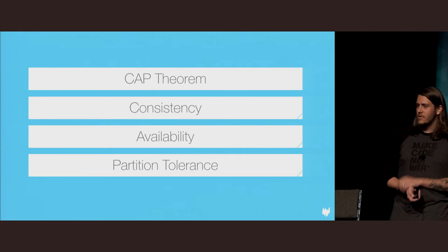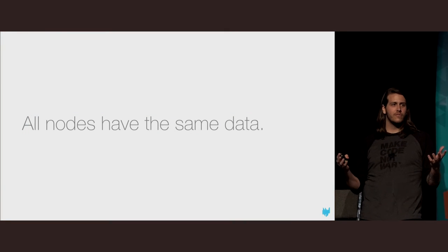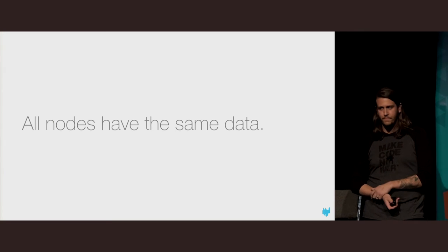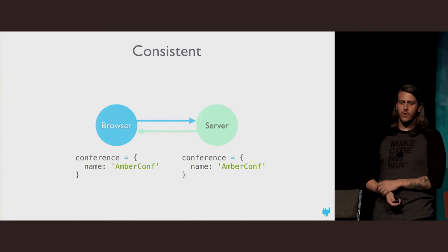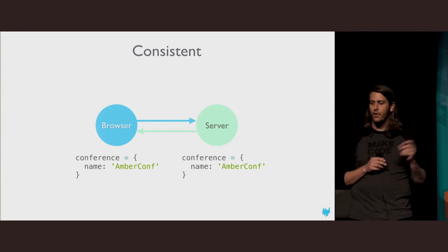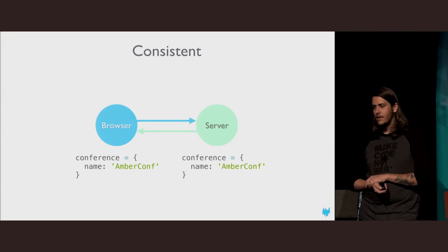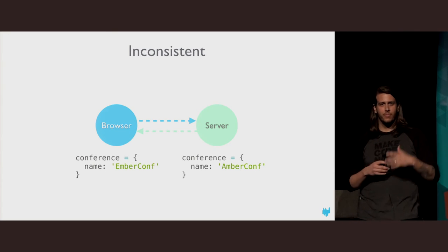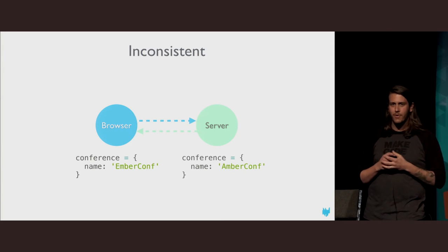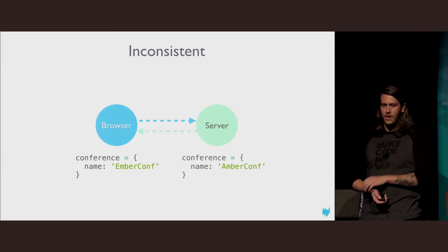Let's break each of these down. Consistency effectively means that all nodes in the distributed system have the same data — we are in a consistent state. In a consistent state, both the browser and server have EmberConf. In an inconsistent state, the browser has different data than the server — the browser has EmberConf and the server has EmberConf. I use a dotted line to denote a partitioned or offline state.